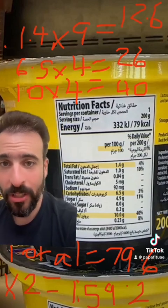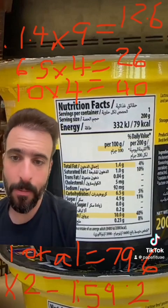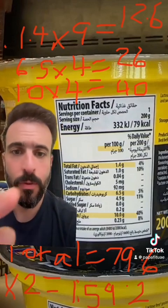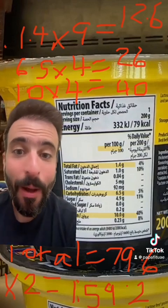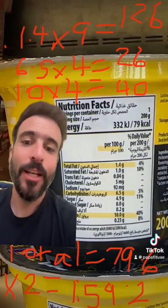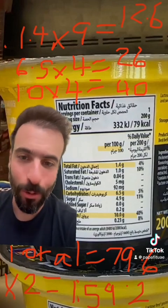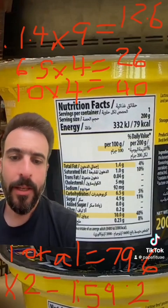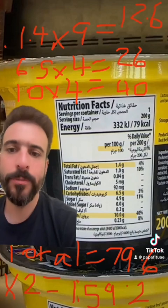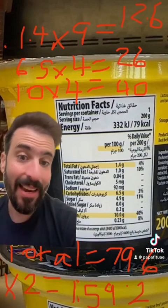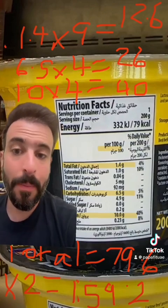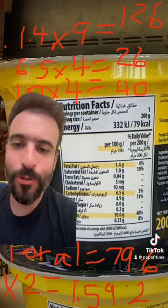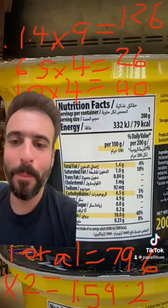So let's do the math — you can see my ugly little red calculations here. I took total fat 1.4 grams times nine calories per gram, which gives us 12.6 calories. Then for carbs: 6.5 grams times four calories per gram equals 26 calories. Finally, the protein: 10 grams times four calories per gram equals 40 calories. Add those all up and you get 79.6 calories, which is what they listed — but that's only per serving, per 100 grams. The container is 200 grams, so you multiply by two to get 159.2 calories for the whole tub.